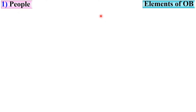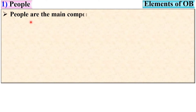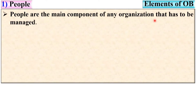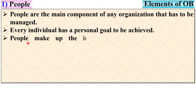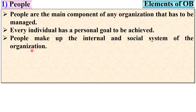The first key element is people. People are the main component of any organization that has to be managed. Every individual has a personal goal to be achieved. People make up the internal and social system of any organization, and they play a very important and vital role in it.